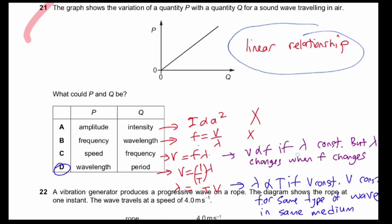Your lambda can never be a constant, because when F changes, lambda will definitely change. So the only thing that could be constant is actually V. So what we'll do is look at the last option D.